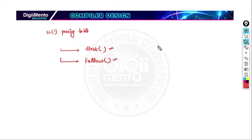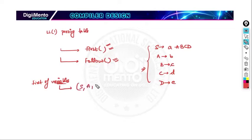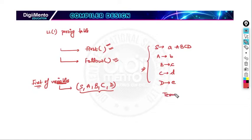Let's take an example. Suppose the given grammar is: S drives ABCD, A drives B, B drives small c, C drives small d, and D drives small e. We have to find the first and follow of all the variables. Here the variables are S, A, B, C, and D — written in uppercase — and the terminals are small a, b, c, d, and e — written in lowercase.